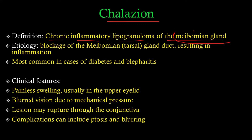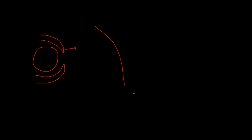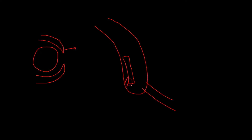Let's see what the meibomian gland actually is. The eyelid has eyelashes and a structure inside called the tarsal plate. Associated with this tarsal plate are glands called the meibomian glands, also known as tarsal glands, though meibomian is the more commonly used term.